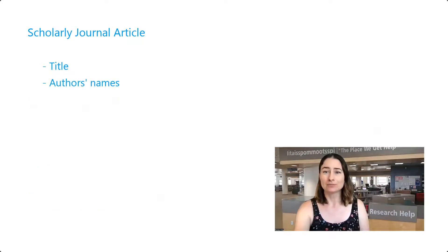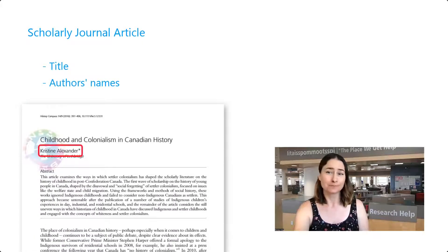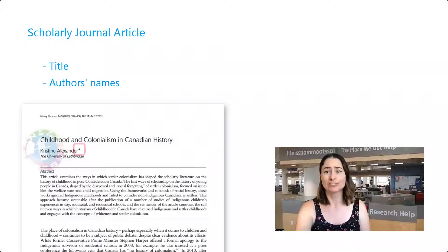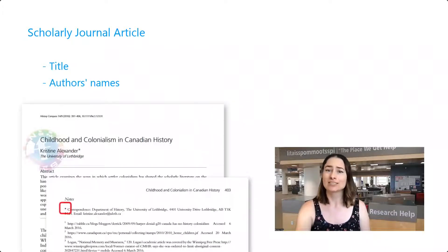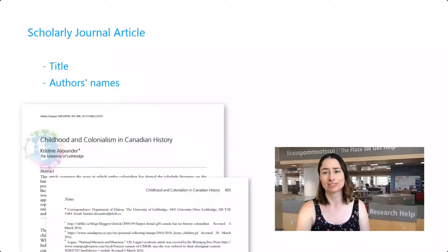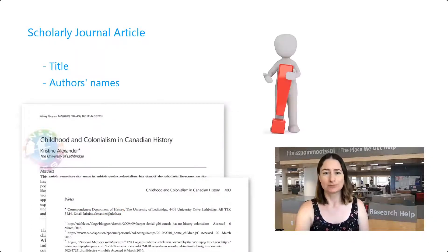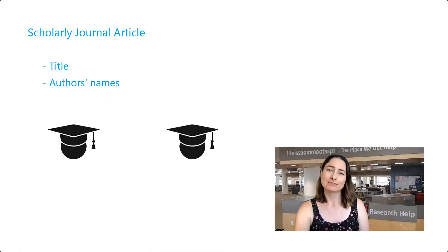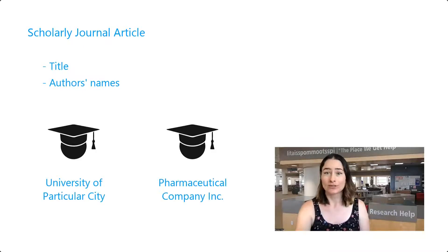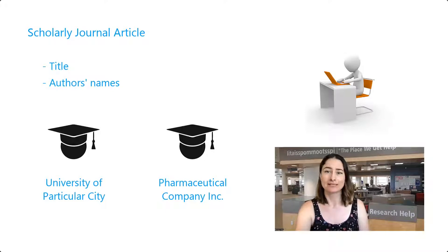The author's names usually appear near the title. In addition to their names, scholarly articles will include additional details about the author, such as their institutional affiliations and contact information. This is an important difference from other non-scholarly source types. The affiliation information, such as the university or company that the authors work for, helps to inform the reader about the person speaking — it's like a mini introduction or sharing a business card.